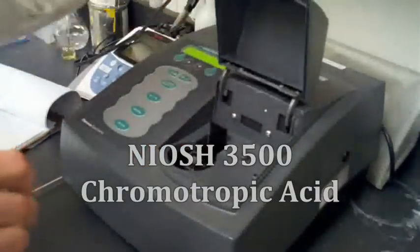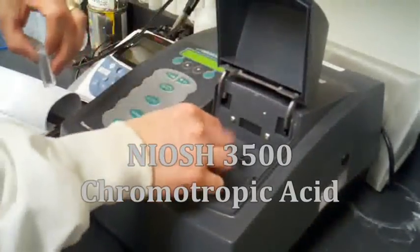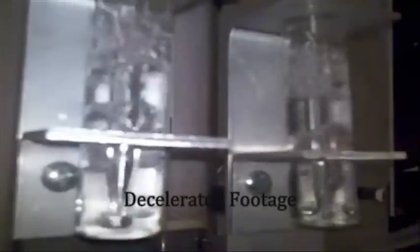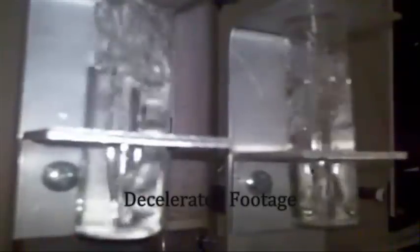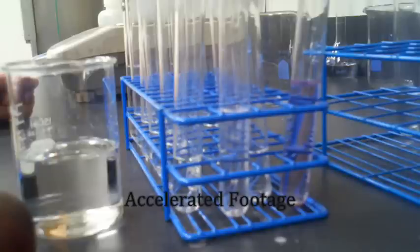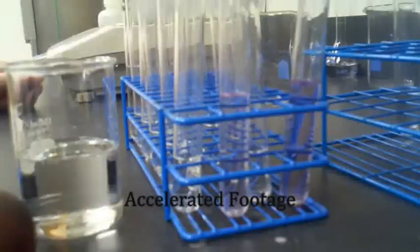The analytical method specified by this test method is a slightly modified version of the NIOSH 3500 method where air is bubbled through an impinger containing a 1% sodium bisulfite solution. This solution is then mixed with chromatropic acid and sulfuric acid to cause a color change proportional to the quantity of formaldehyde in the solution.